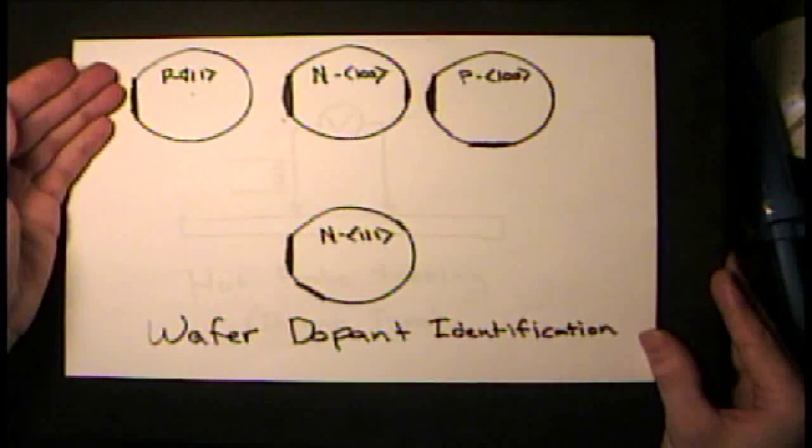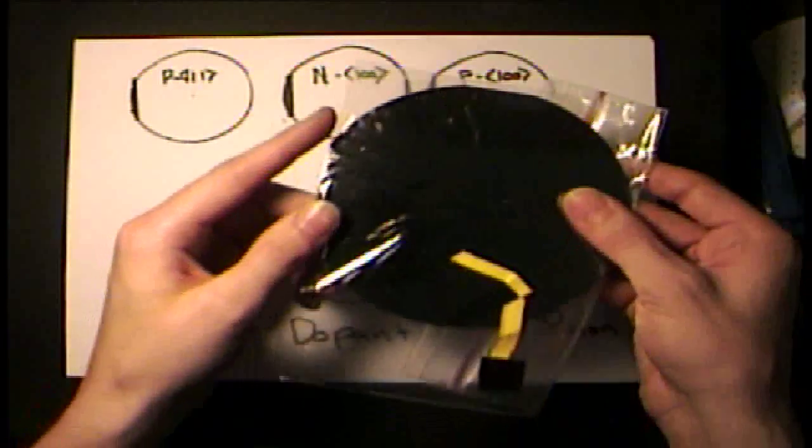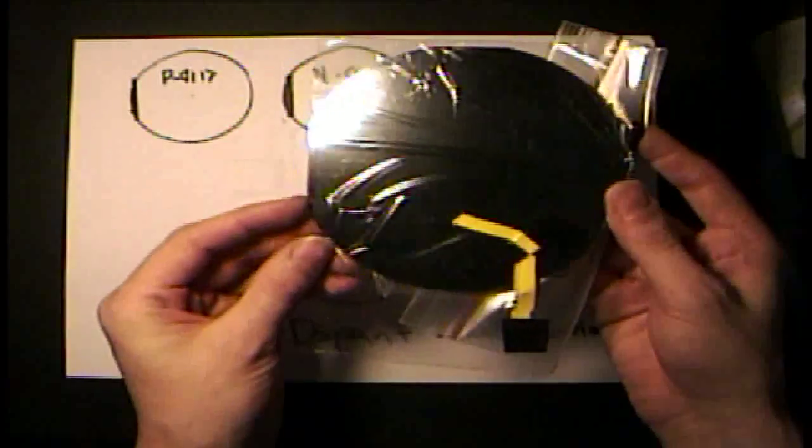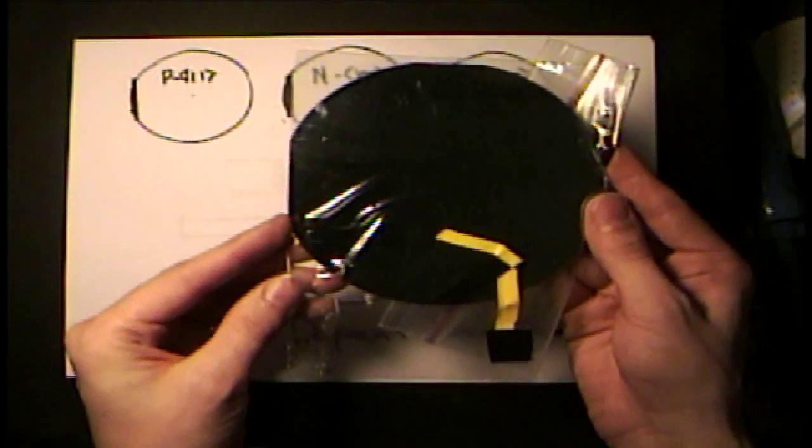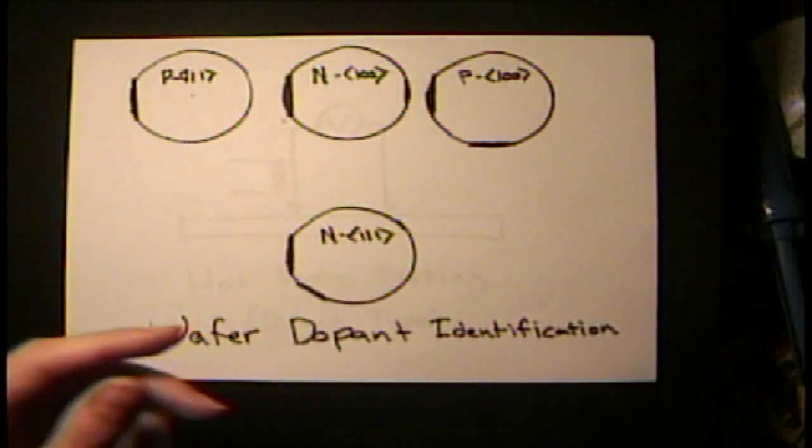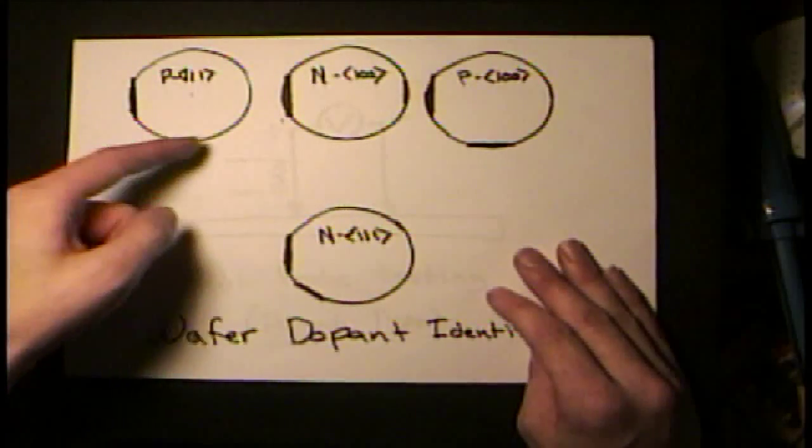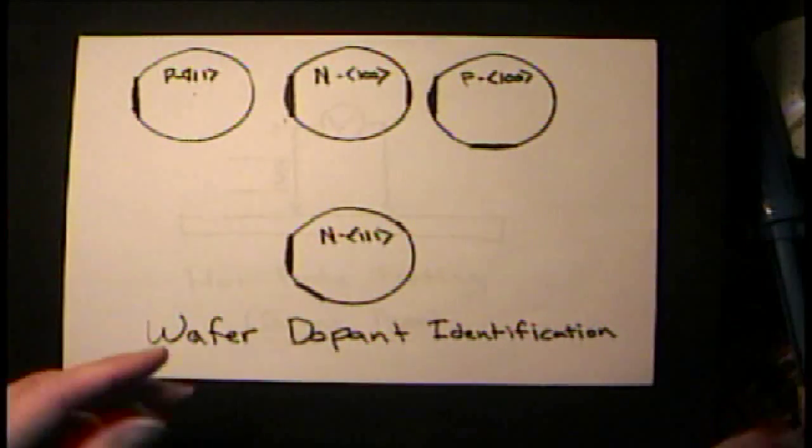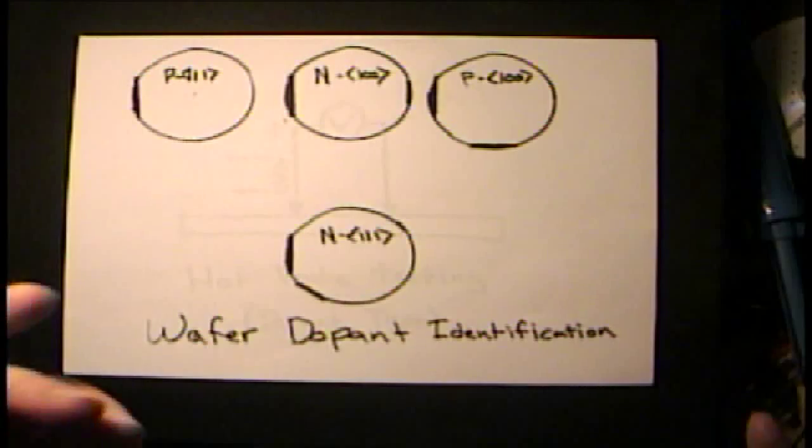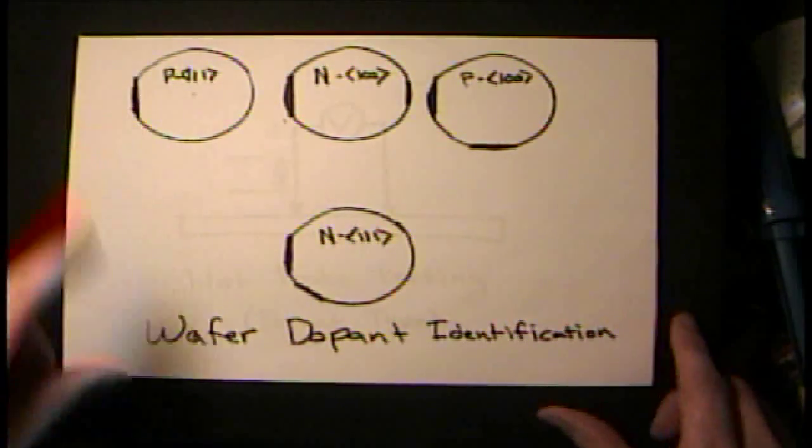You can look for the wafer flats. On wafers, they grind the edge of the wafers on many of them. Many of the older ones, like the 4-inch wafers, will have a primary flat and a secondary flat on them that's ground on the side, and that indicates what type of wafer they are. But newer wafers, they don't do that because it uses up real estate on the wafer.